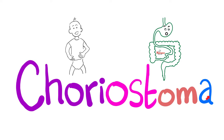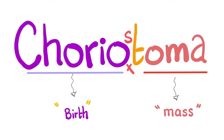If it ends in 'oma,' it's a mass — except Oklahoma. Choristoma is when you have a mass of tissue growing at an abnormal location. Example: pancreatic tissue growing inside the wall of the stomach. Now, what does choristoma even mean? 'Choreo' means birth, or related to birth, or after birth. Remember the chorion that gave us the placenta?